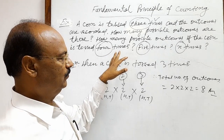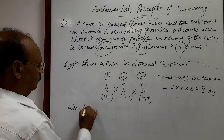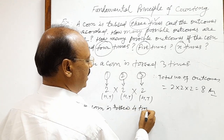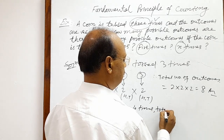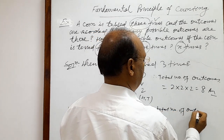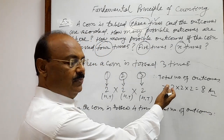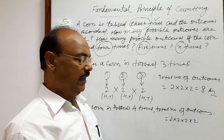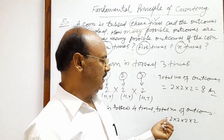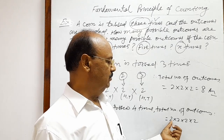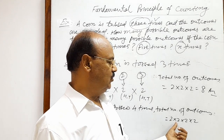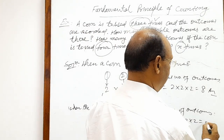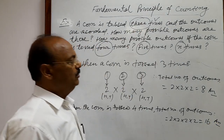Similarly, when the coin is tossed four times, the total number of outcomes will follow the same pattern. This will be two into two into two into two, because when the coin is tossed the first time, possibilities of outcomes are two — either head or tail — and similarly every time there are two possibilities. So for four tosses: two into two into two into two, which is equal to 16. This is the answer.